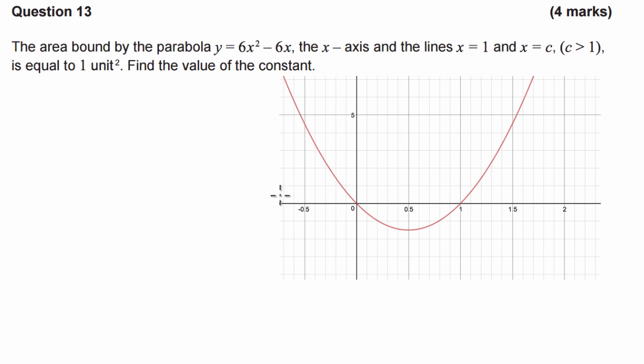Alright, so let's see what they're asking. The question just came like this. Now I've drawn this graph here to make it easier for us all to understand. So we've got the area bound by the parabola 6x squared minus 6x, which is what is drawn here. We've got the line x equals 1, now let's draw that in.